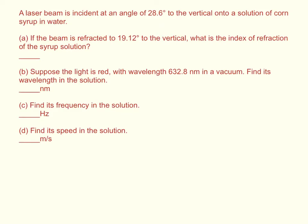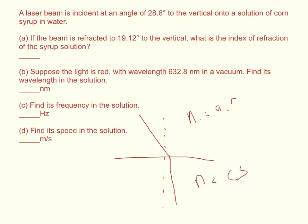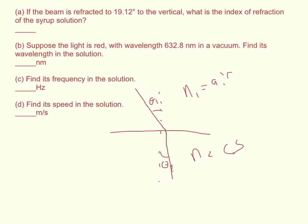So here's what we're going to say. We have some corn syrup, and here's the normal to that corn syrup — or the vertical angle. There is a laser firing at 28.6 degrees to the vertical, and then it ends up at 19.12 degrees — a little bit less than that. If we call this air, N1 is air and N2 is corn syrup, and this is theta 1 and this is theta 2, then we can use Snell's law to solve for N2.